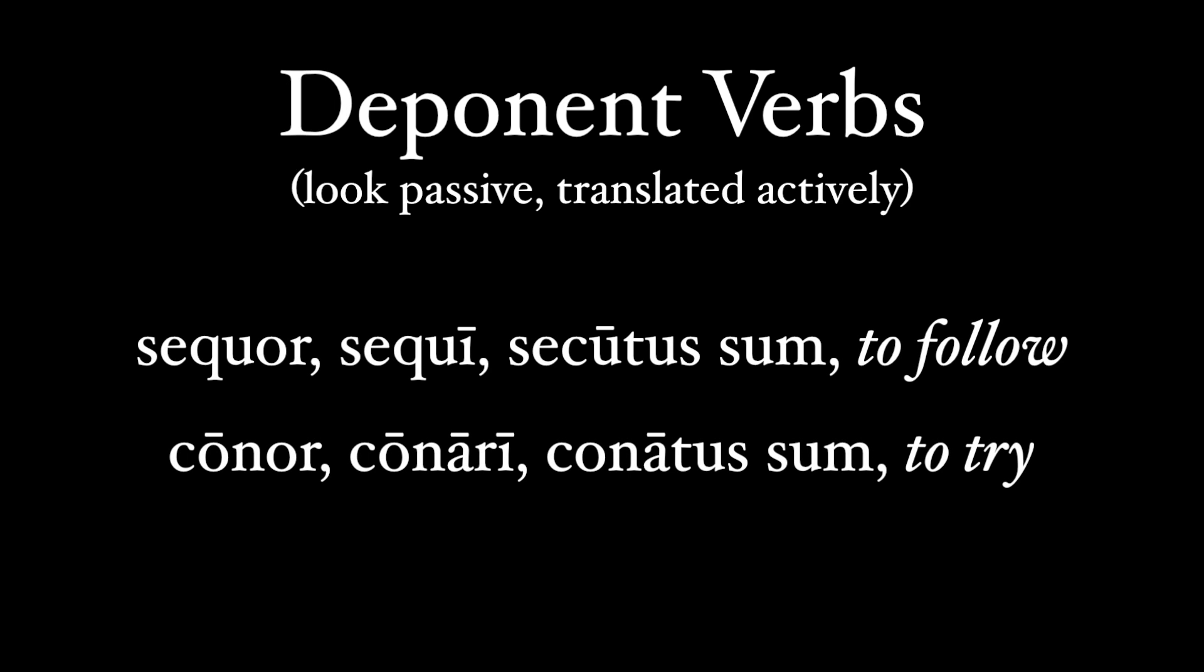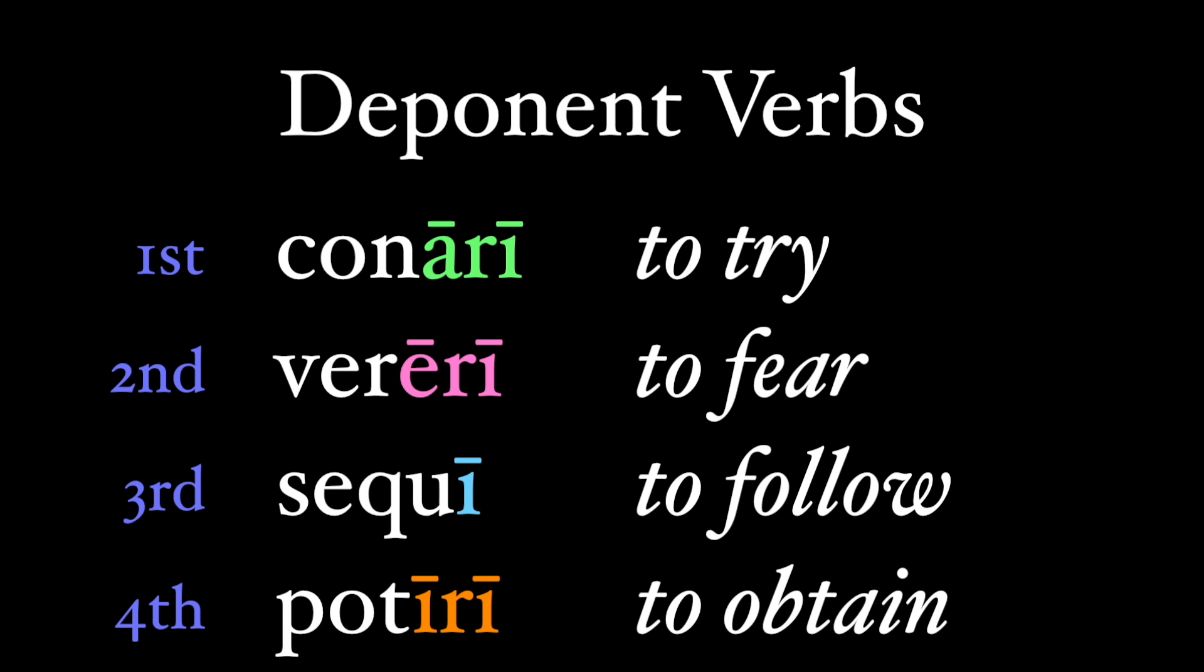For deponents, like sequor or cōnor, the present infinitive is, or at least looks identical to, this present passive form. Here's the same conjugation list, but this time only with deponent verbs in all conjugations. Cōnārī, to try; verērī, to fear; sequī, to follow; and finally potīrī, to obtain.